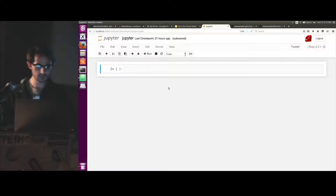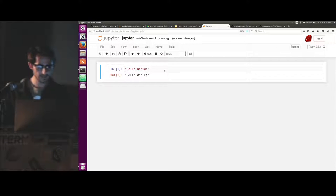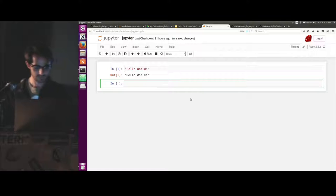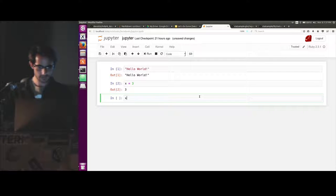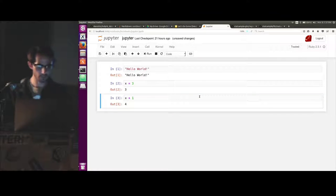And just to give a quick demo, this is basically what it looks like. And you can just write Ruby code in here. And it prints out, we could say X equals three. X plus one. We have four.